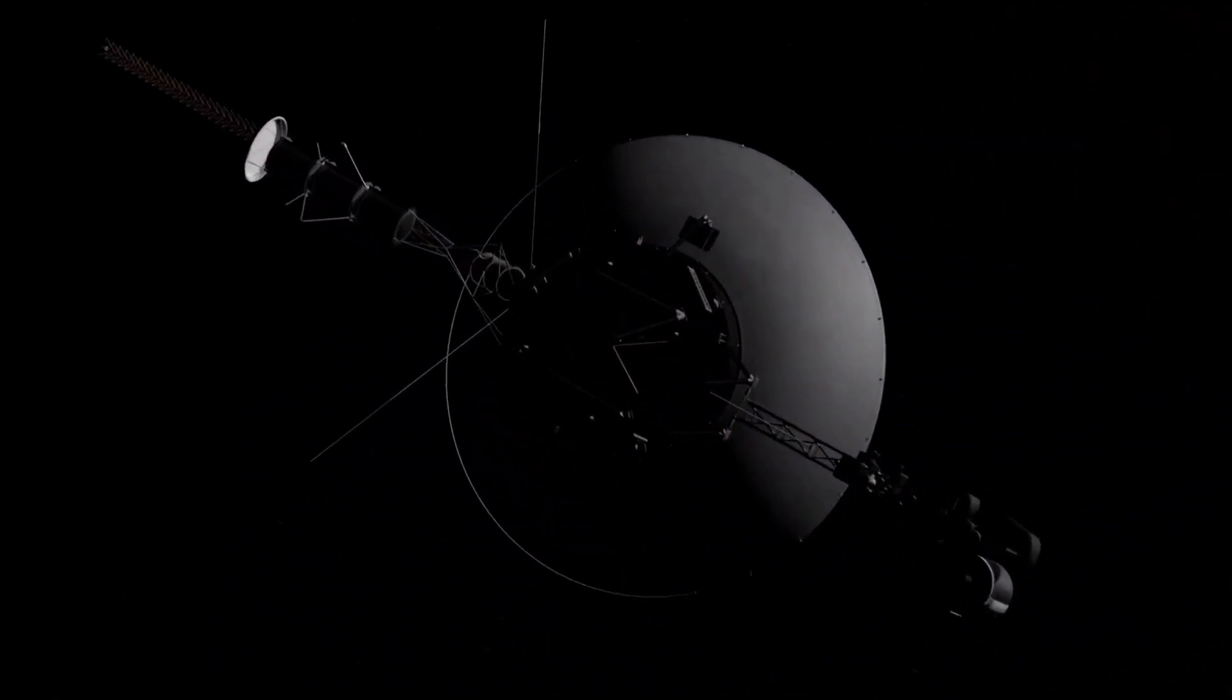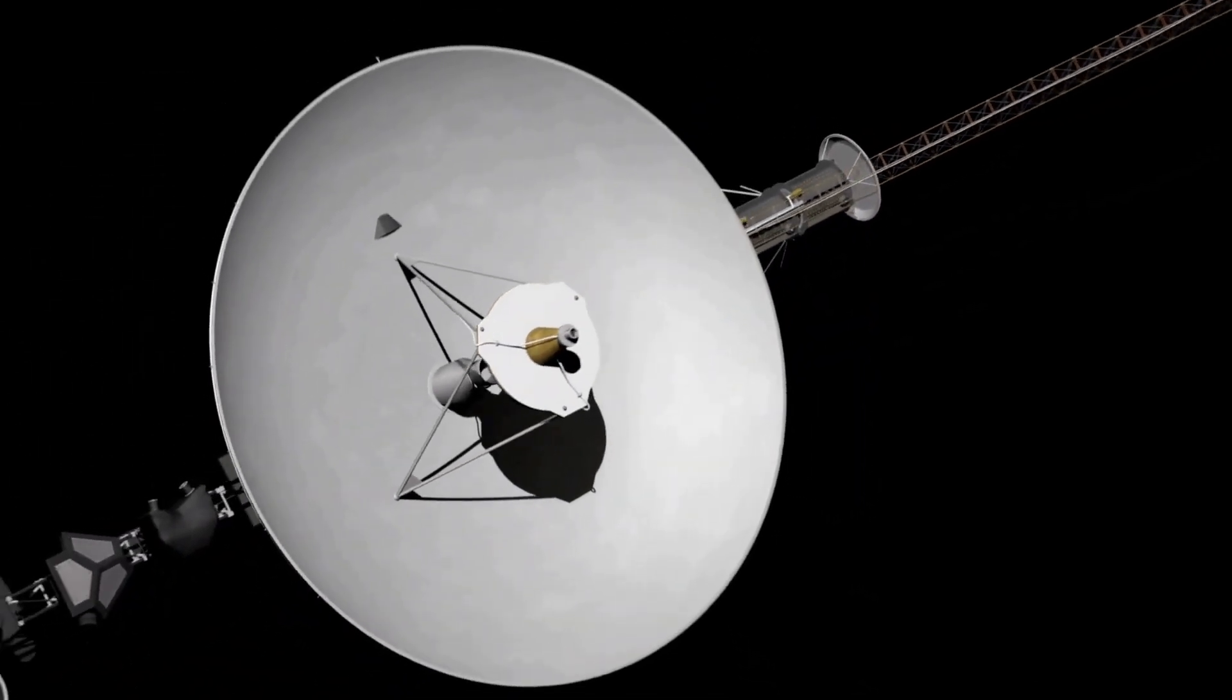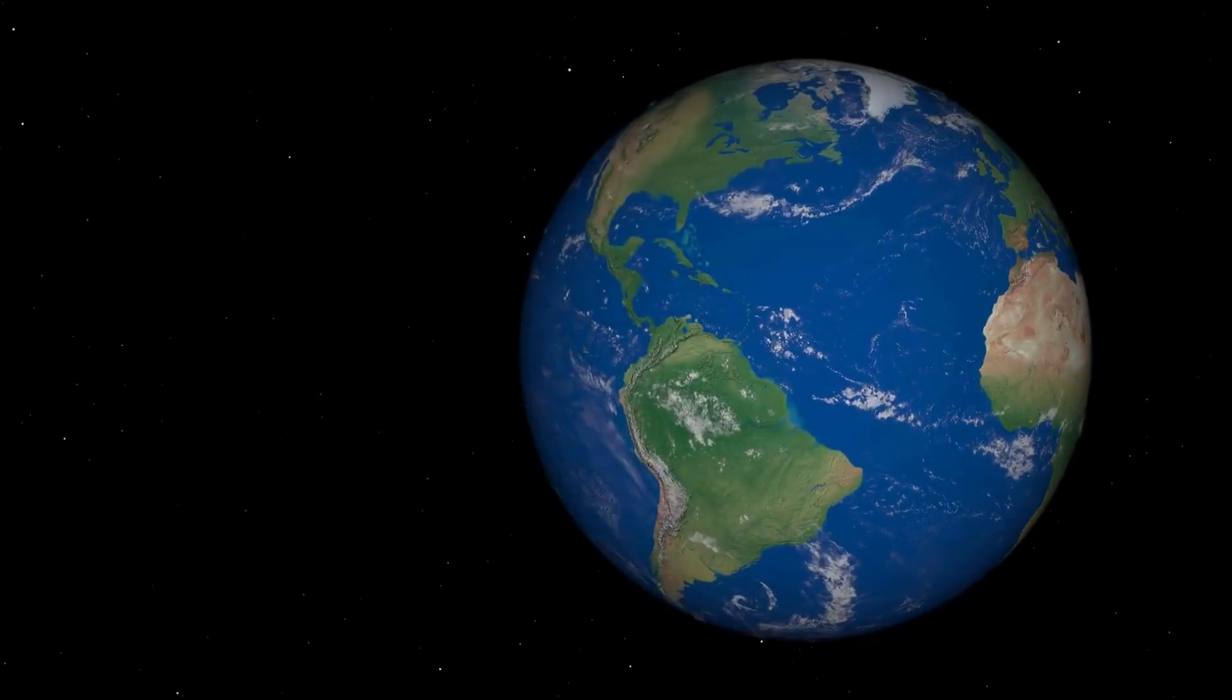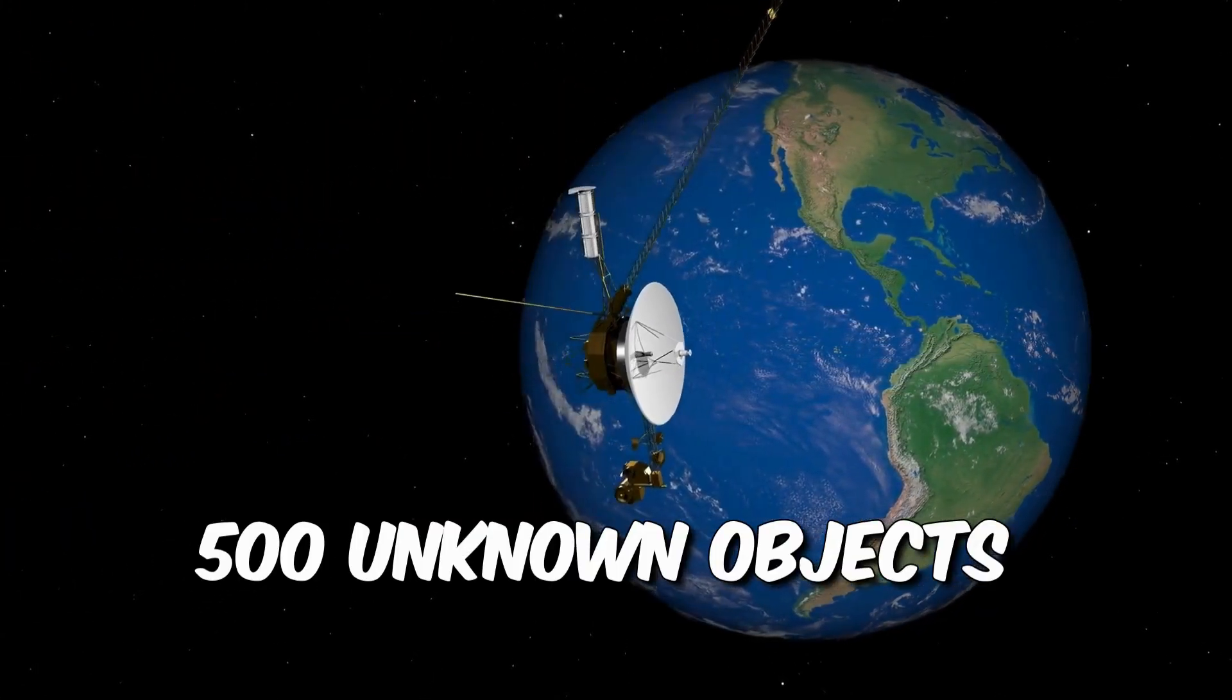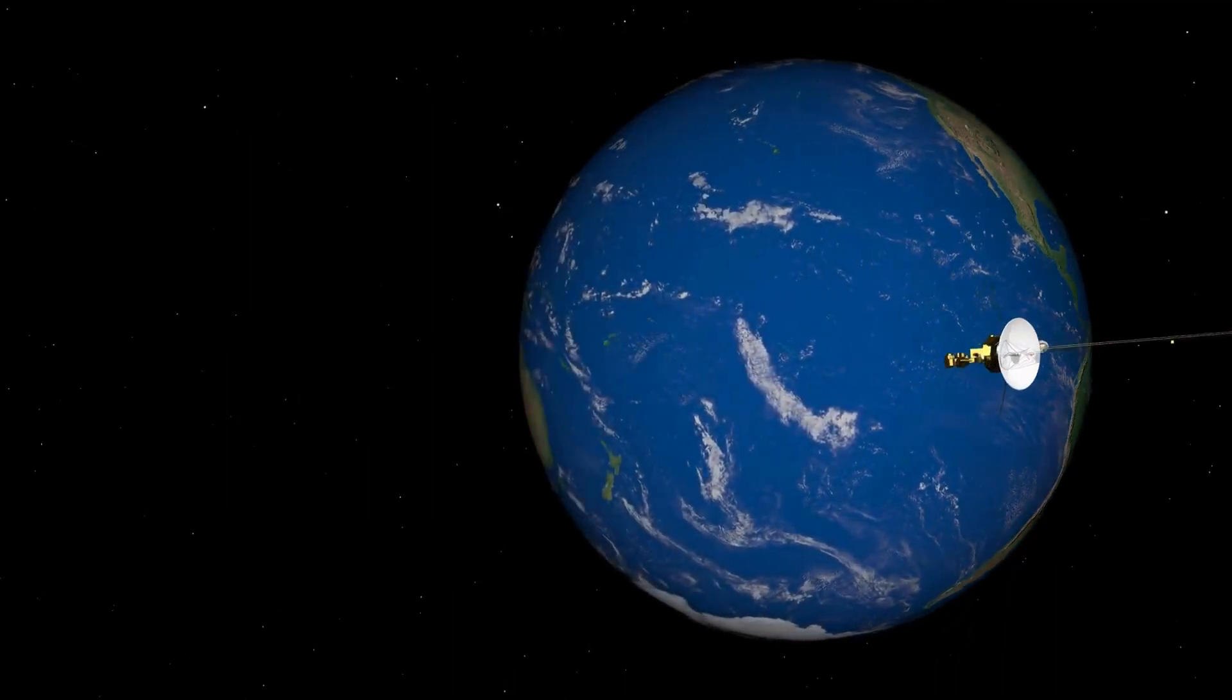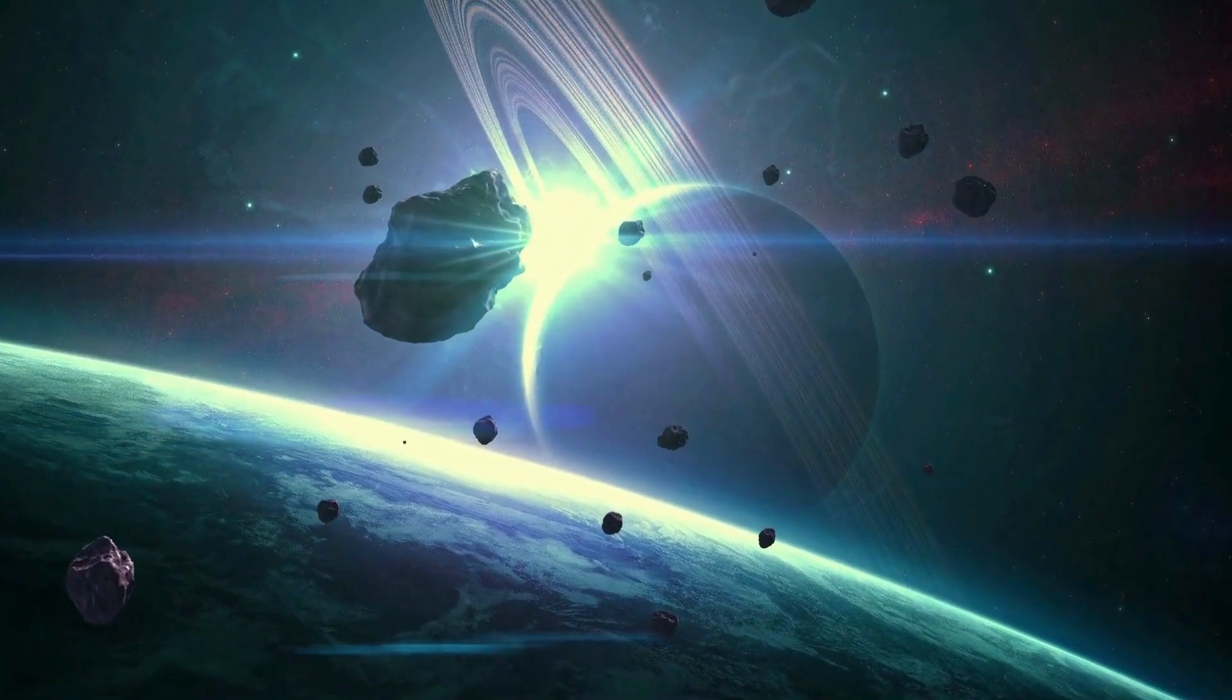But now, brace yourselves for this mind-blowing news. Voyager 1, with a stamp of approval from the legendary Neil deGrasse Tyson, has spotted not 10, not 100, but a whopping 500 unknown objects cruising through our solar system. These mysterious space travelers might just rewrite the rulebook on space exploration as we know it.